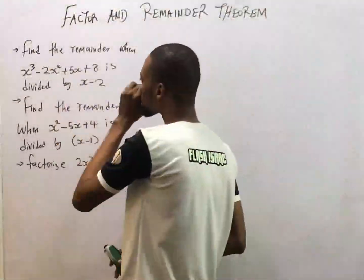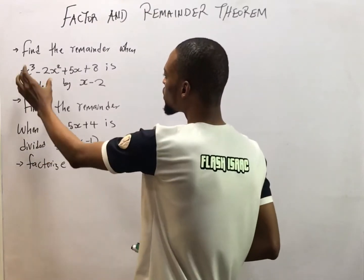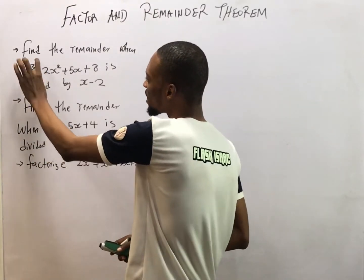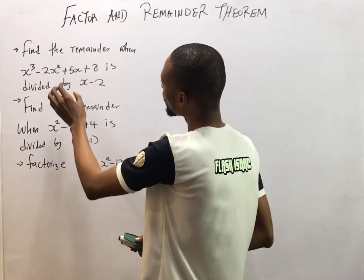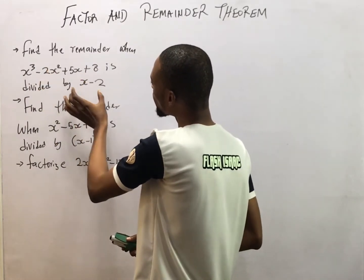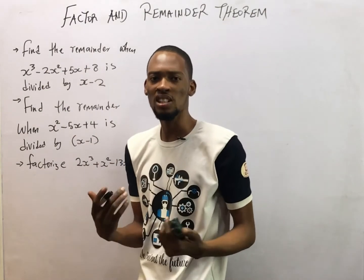Polynomials are expressions with ascending or descending powers of a variable. So this polynomial is of degree 3 because the highest power is 3. We are told that this polynomial was divided by this and there was a remainder. What is that remainder?